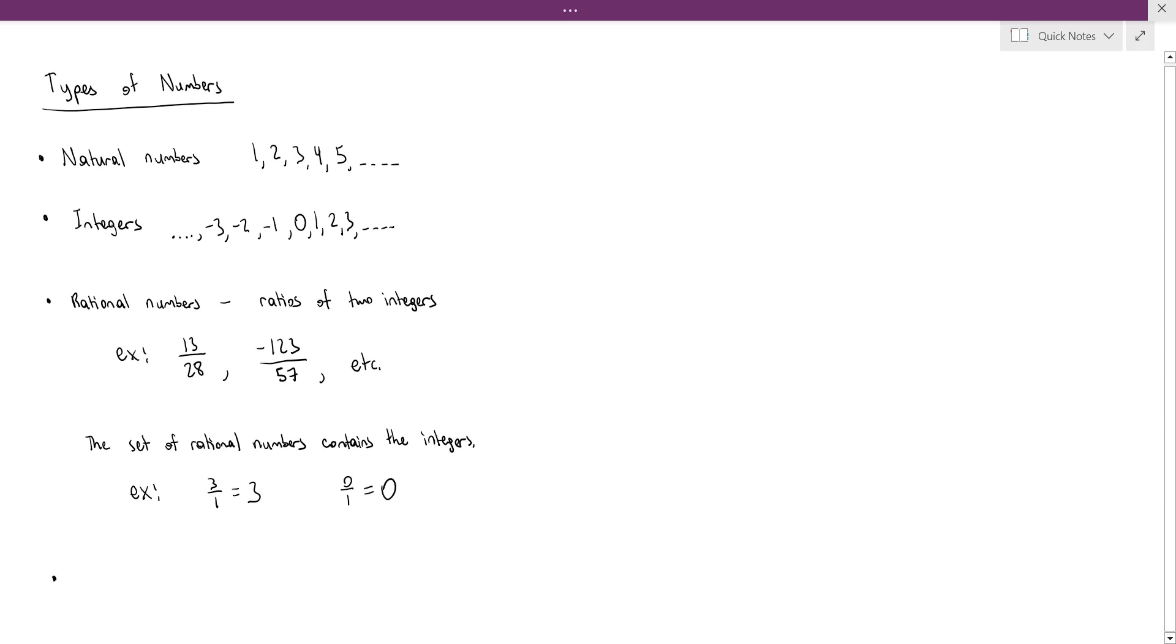We also have the irrational numbers. And as the name suggests, these are numbers that are not rational numbers. Some examples of irrational numbers are the square root of 2, pi is also an irrational number, and e is also an irrational number as well.